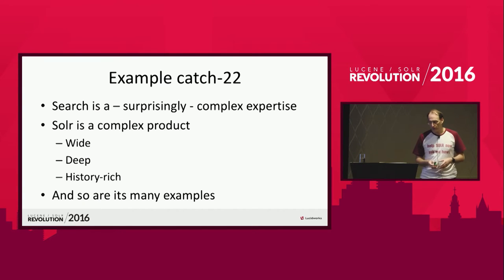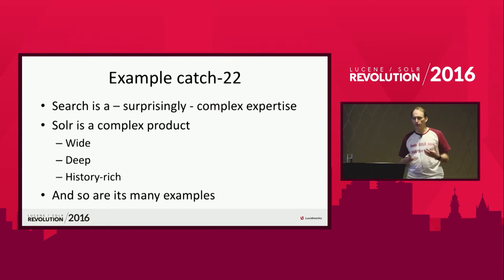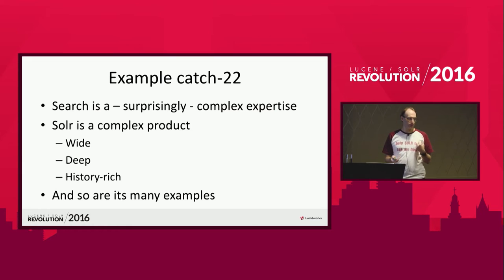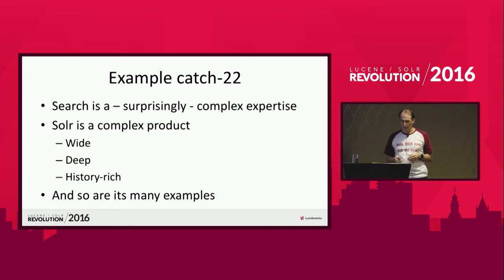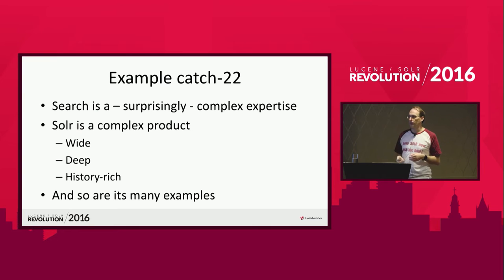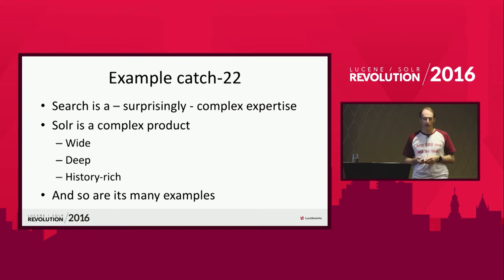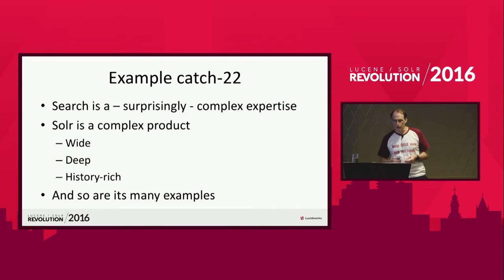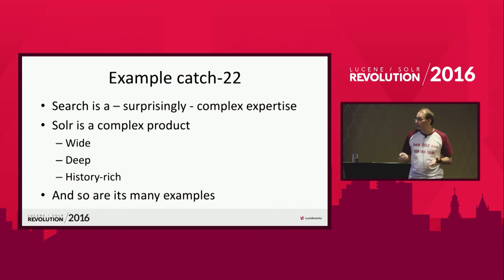We're talking about examples. The examples in Solr suffer from a catch-22 problem. Search is a surprisingly complex expertise — it seems easy to start with, and then you try to do one more thing and it suddenly becomes super complex. Solr is a particularly complex product: it's very wide, with a lot of features for a lot of different target audiences, and also very deep. Even one particular feature takes quite a lot of effort to understand every possibility it offers. It also has a lot of history — legacy aspects, remainders of old implementations. And just as Solr is complex, so are the examples, at least in their current iteration.